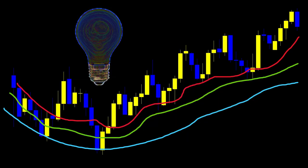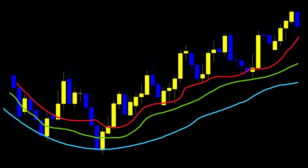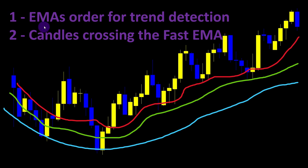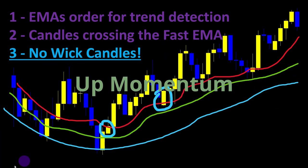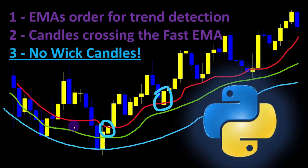I came across an idea I was curious about and decided to test it on top of the existing strategy. We will still use three moving averages for trend detection and candles crossing the fast EMA as entry signals, but we are adding one more condition: the crossing candles should have no or very short tail. In an uptrend, the candle should have a very short lower tail; in a downtrend, no high tail. These two candles here confirm strong upward momentum with very low tails.